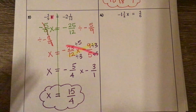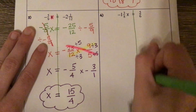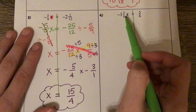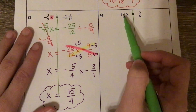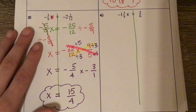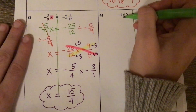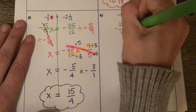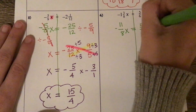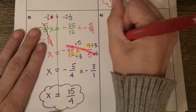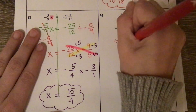Number 4. Again, we've got a number right next to our variable, which means multiplication, so we need to divide to solve. When we multiply and divide fractions, we need improper fractions. So I'm going to immediately rewrite them. 1 times 8 is 8, plus 3 is 11. So negative 11 eighths x equals 5 sixths. Now I'm going to go through my solving process — it's being multiplied by negative 11 eighths, so I'm going to divide by negative 11 eighths on both sides.